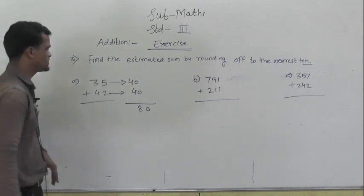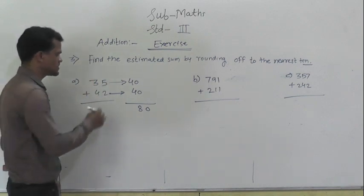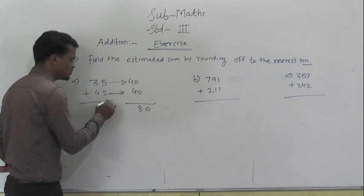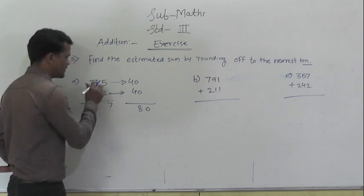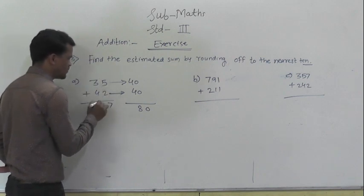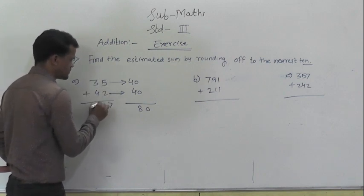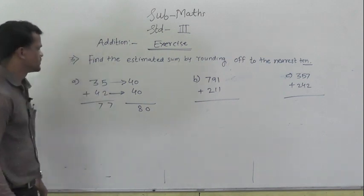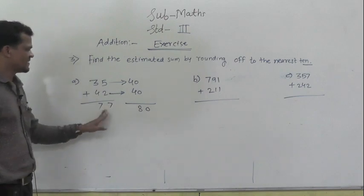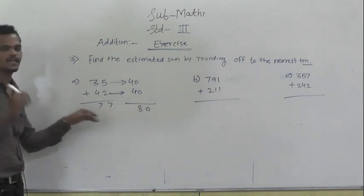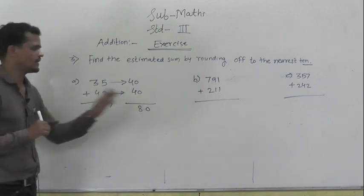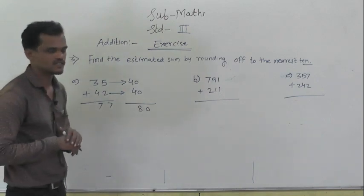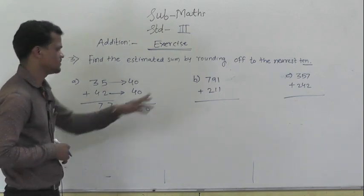Now the actual sum: 5 plus 2 is 7, 3 plus 4 is 7. So 77 is the actual sum and 80 is the estimated sum.